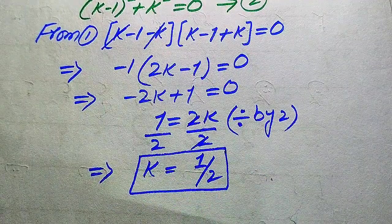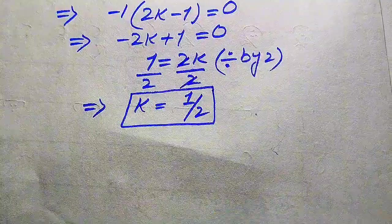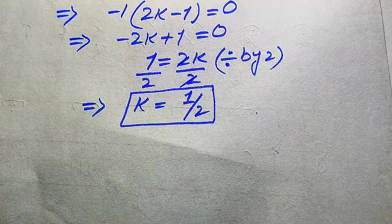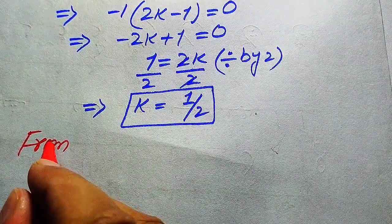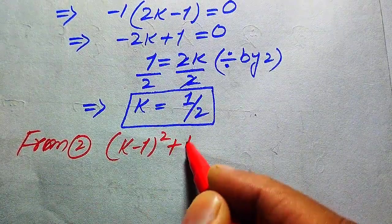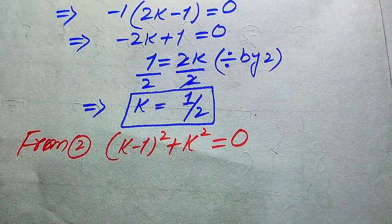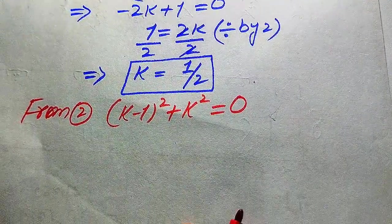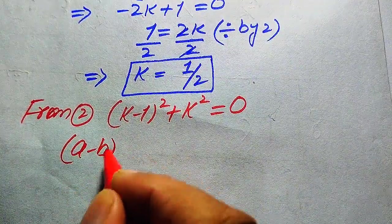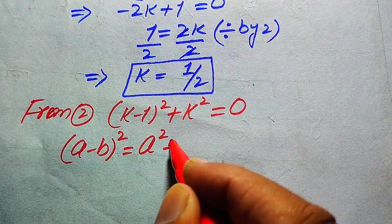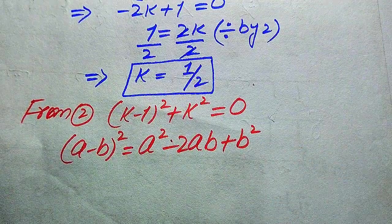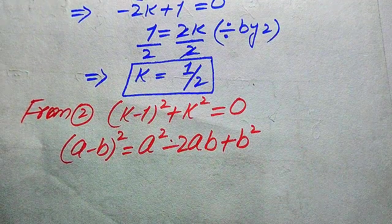To find the other roots we solve Equation 2. From Equation 2 we have (k minus 1)² plus k² equals 0. We apply the expansion formula (a minus b)² equals a² minus 2ab plus b² to the first term.